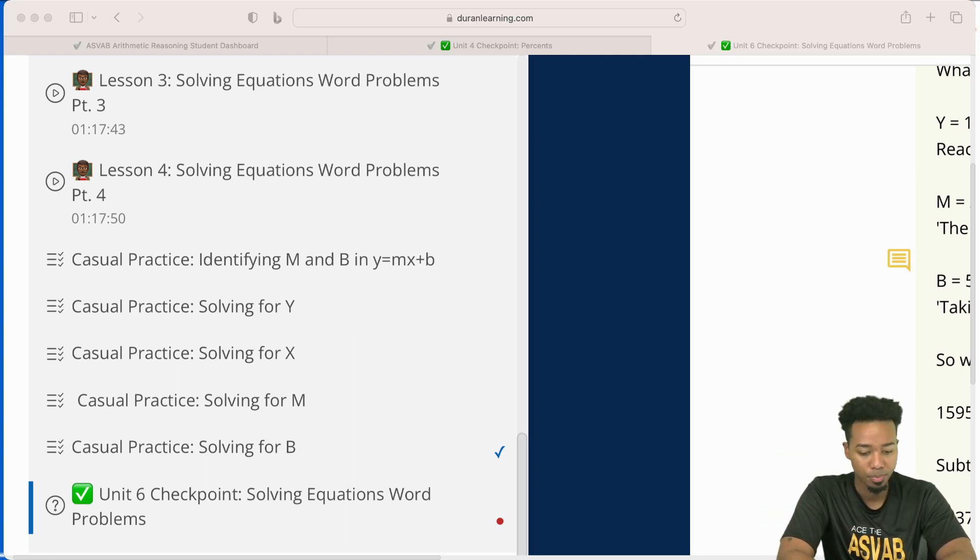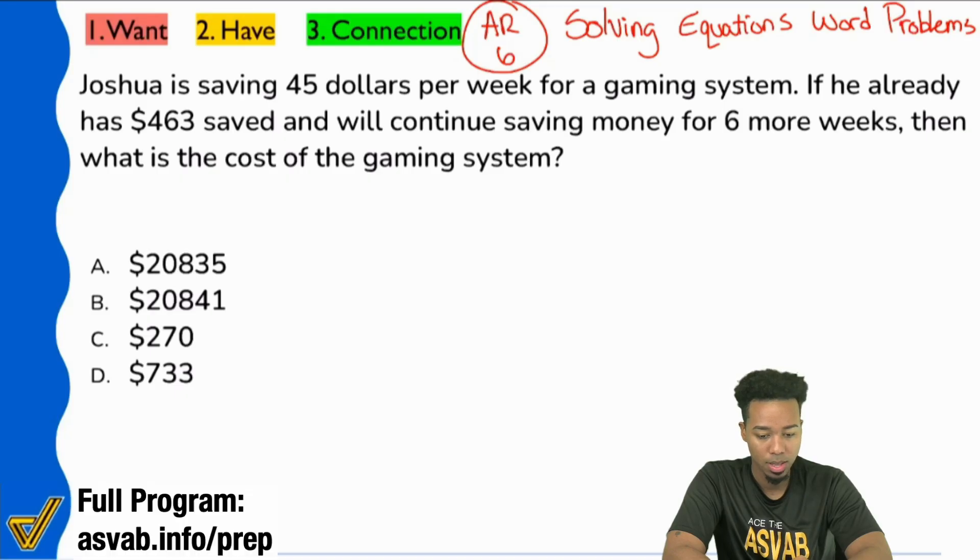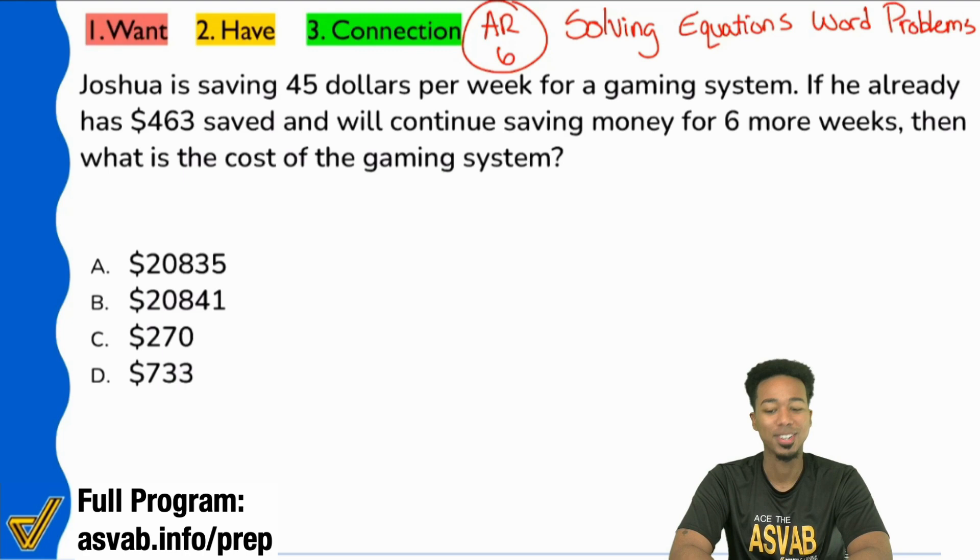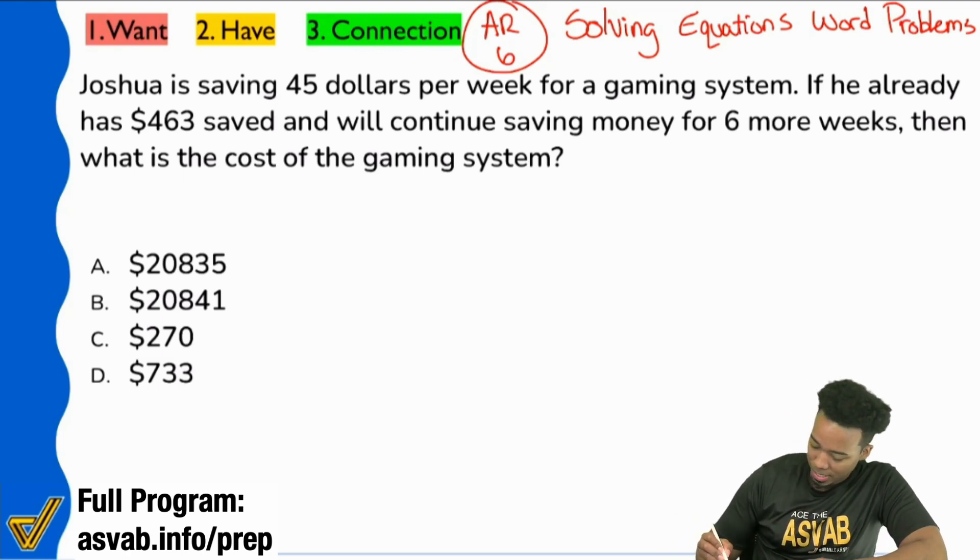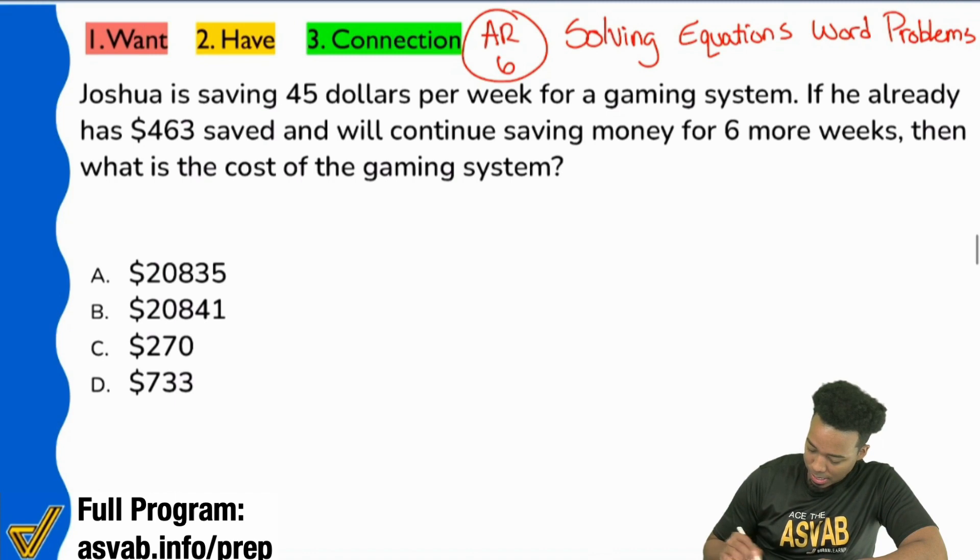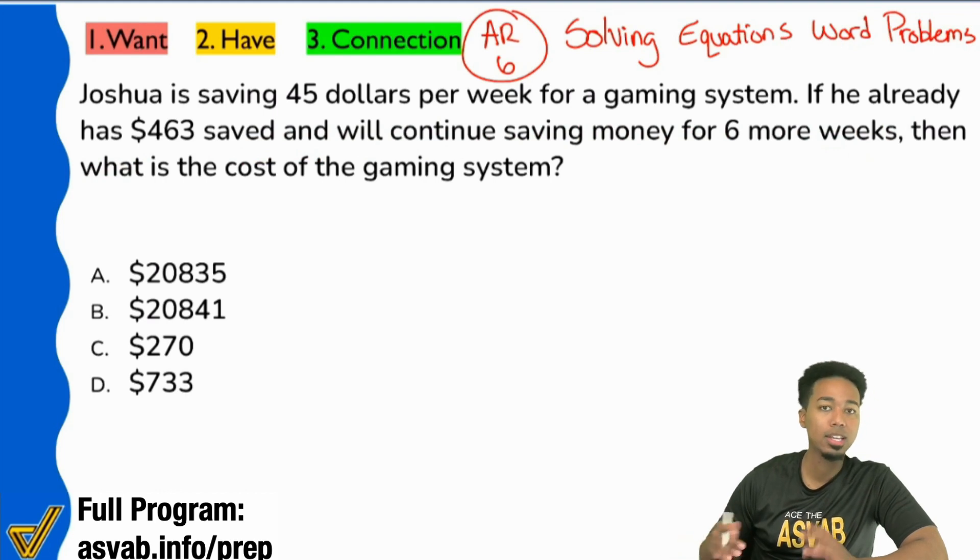So coming back over here, get that timer out. And let's get back to work here. So back there. Perfect. And we're good. So here we go. First things first, everybody, we are going to highlight what we're looking for. And that's going to say right here, it says, if he already has blah, blah, blah and blah, blah. I don't really care about all that. I just care about what the question is asking me to find.